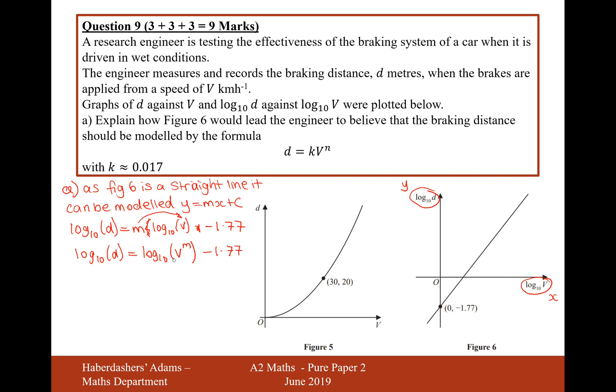Now I just need to rearrange this a little bit more. If I move all the logs onto the same side and subtract them, if I subtract the logs, what's going to happen inside the brackets is it's going to divide. Now to get rid of the log, I'm going to do 10 to the power of both sides. 10 to the power of the left-hand side will just cancel it out. So d divided by v to the power of m equals 10 to the power of minus 1.77.